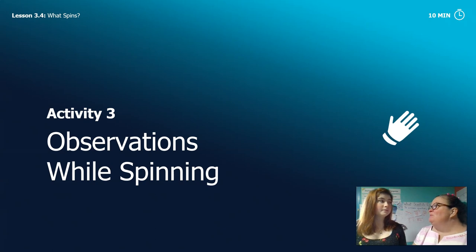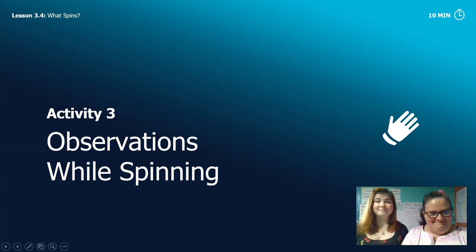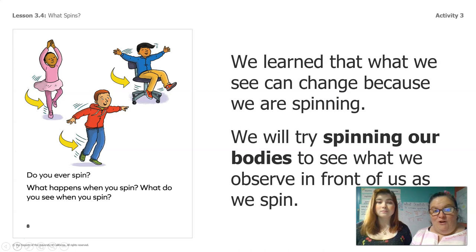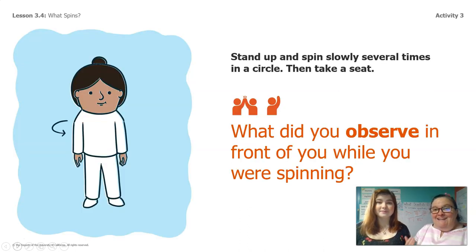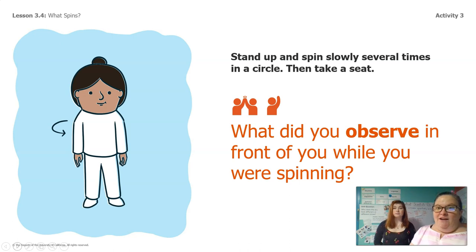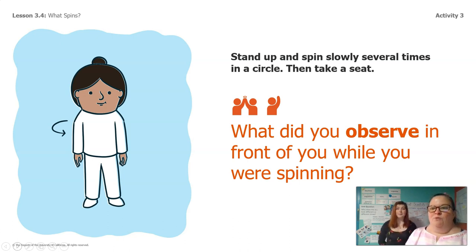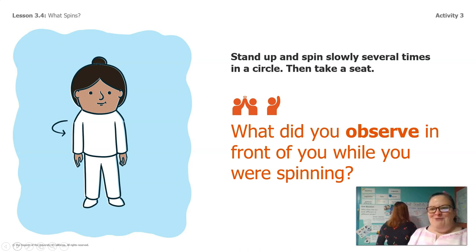Rosie, do you mind staying and helping us make some observations while spinning? Sure. So we learned that what we can see can change because we're spinning. We're going to try spinning our bodies to see what we observe in front of us. I want you guys to go ahead and stand up and spin around slowly — Rosie's going to show you how to spin slowly in a circle a couple times. Pay close attention to what you observe in front of you while you're spinning. What do you observe in front of you while you're spinning?